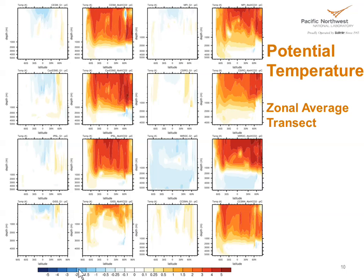These are zonally averaged cross-sections of the annual averages, giving a better feel for the differences. Some common features are the same: cooling in the tropics near the surface and slight warming at high latitudes, which penetrates much more deeply because this is where deep water formation occurs. There are some signatures — like in the MIROC model — where there's a cooling in both the geoengineered and the four-times CO2 simulations, suggesting that model may not be near equilibrium. The GISS model is unusual as well; the mixing of heat is much different from the other models and we don't understand that at this point.